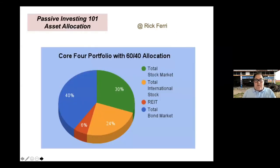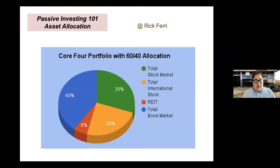Rick Ferri's Core Four portfolio uses a 60/40 split with 6% in REITs. Since the total stock market and total international funds already contain REITs, adding 6% explicitly increases that allocation — so you have to decide if that's a bet you want to take.